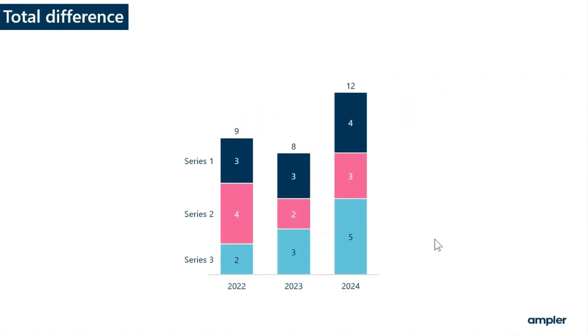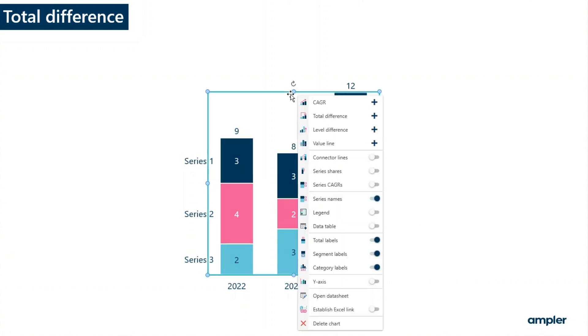Total difference helps to visualize the difference between the totals of two categories in a chart. To insert a total difference, right click on the chart and select total difference from the context menu.